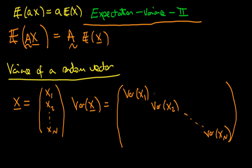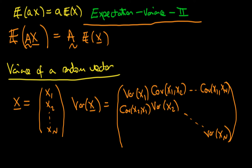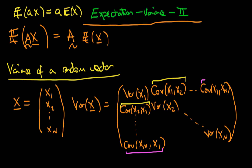The off-diagonal elements are the covariance terms. Just to the right of the variance of x1 is the covariance of x1 with x2, continuing all the way to the covariance of x1 with xn. Underneath the variance of x1 is the covariance of x2 with x1. Notice this element and that element are exactly the same, because the order in which you take the covariance of two random variables is completely unimportant. Continuing down the column, we get the covariance of xn with x1, which again equals the element above it.